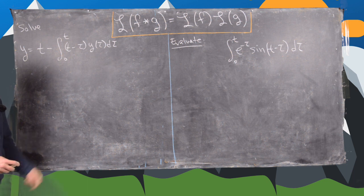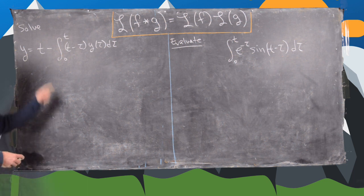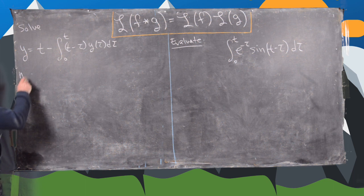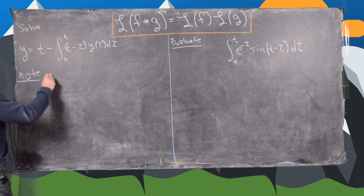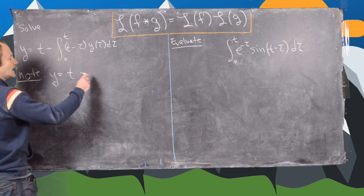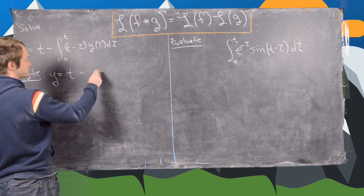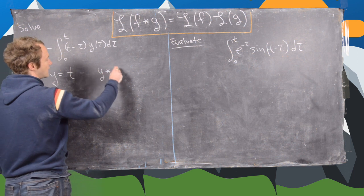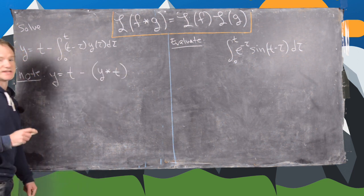If we solve it this other way, we'll see we'll get the correct solution. What we want to first notice is that this is the same thing as saying y equals t minus the convolution of y convolved with the function which is just t.